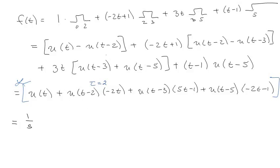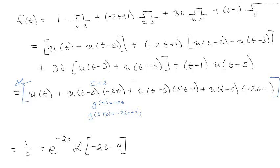Now when I Laplace this guy, tau is equal to 2, and g of t is negative 2t. So g of t plus 2 is negative 2 times t plus 2. So that means it's going to be plus e to the negative 2s times the Laplace transform of negative 2t minus 4. Alright, so that's that guy.